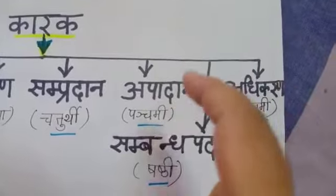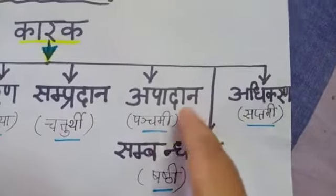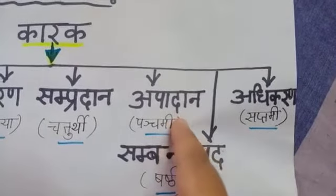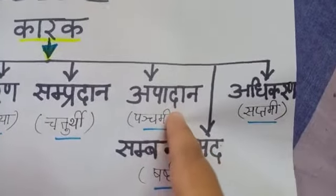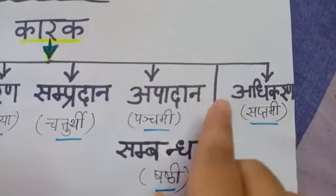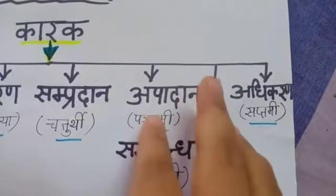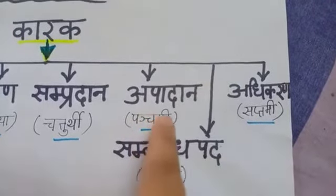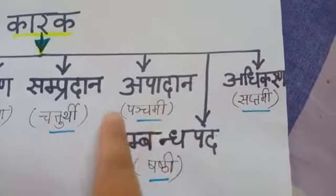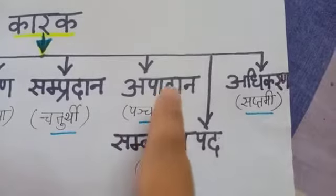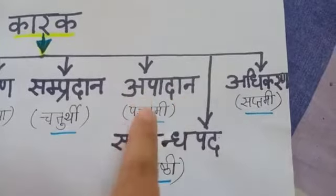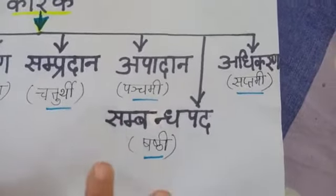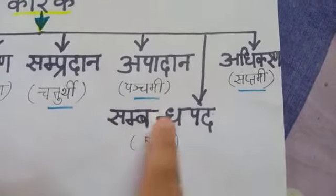Apadana karak means minus or 'from something' — something less from something. Apadana karake always takes panchami vibhakti.